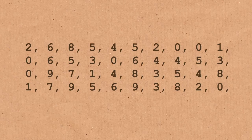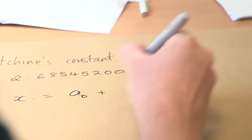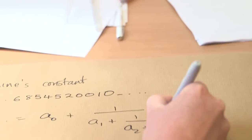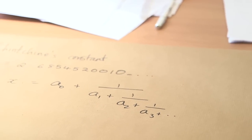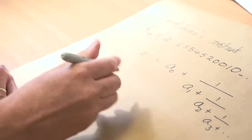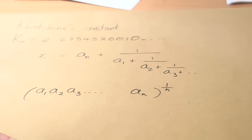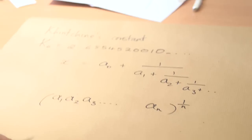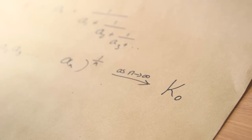Basically, if you take almost any number and work out its continued fraction expansion — writing x as a₀ + 1/(a₁ + 1/(a₂ + ...)) — and then take the product of all those a's (a₁ × a₂ × a₃ × ... × aₙ), and take the geometric mean (the nth root of that product), as n goes to infinity it converges to Khinchin's constant. And this is true of almost any number.